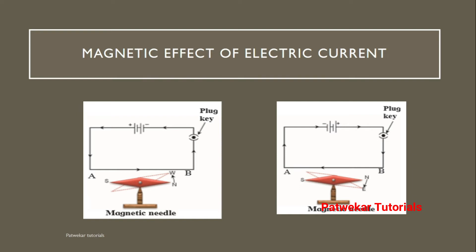This is just a revision. We made an electric circuit — here the plus/minus means a battery. When we pass current through the circuit, the magnetic needle fluctuates. This means that because of electricity there is a magnetic effect.